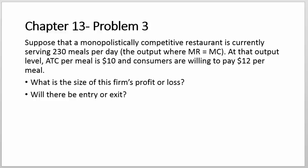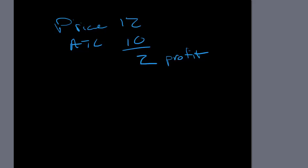And then how many meals do we do? We have 230 meals at that profit level. So we're going to multiply: $2 times 230, which gives us $460 as our total profit.